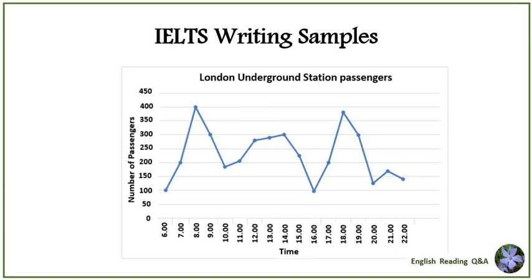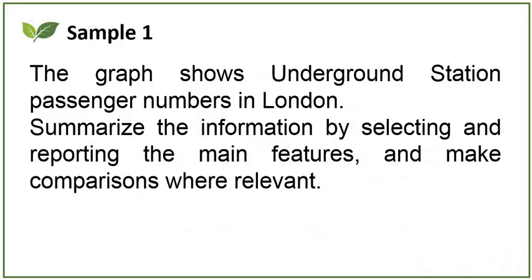IELTS writing samples. The graph shows underground station passenger numbers in London. Summarize the information by selecting and reporting the main features and make comparisons where relevant.